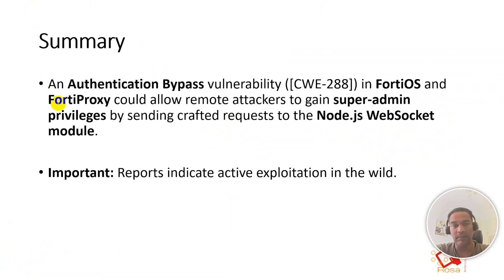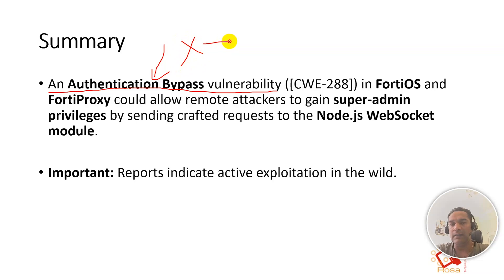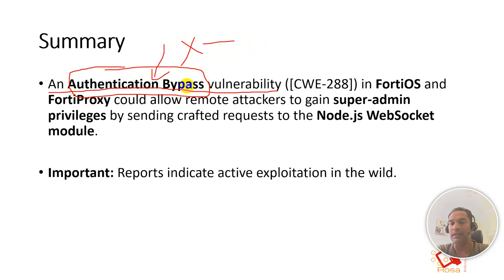Let's start from the full summary. This is an authentication bypass vulnerability. Authentication bypass means no need to authenticate — the attacker is not required to be authenticated; anyone can attack this. The attacker does not have to authenticate to the FortiGate firewall. This makes it super critical because anyone over the internet who has reachability to your firewall's admin interface or the HTTPS of the FortiGate can exploit this vulnerability.